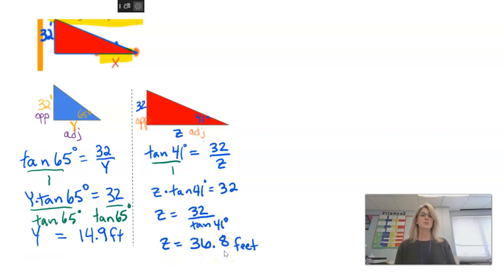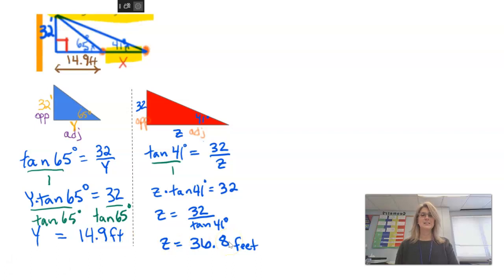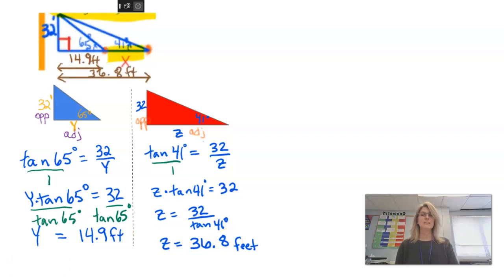We are asked to find this distance, X. So what do I do with these two distances? I need to subtract them. So I'm taking that 14.9, which is my friend's distance from the pole. My distance is 36.8. Find the difference between the two, and I get 21.9 feet. So that would be the distance between me and my friend.